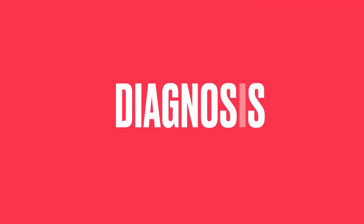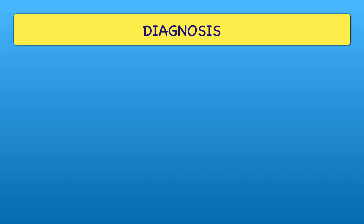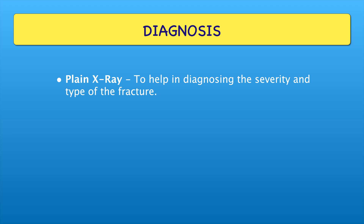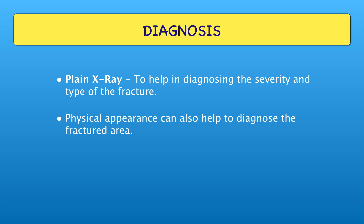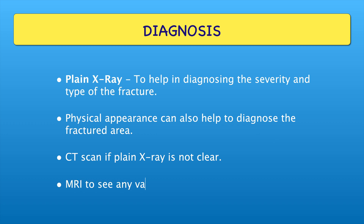Now moving to the diagnosis part. Diagnosis can be done by plain X-ray to help in diagnosing the severity and type of the fracture. Physical appearance can also help to diagnose the fractured area. CT scan is used if plain X-ray is not clear, and MRI to see any vascular damage.